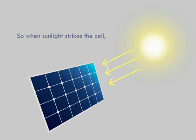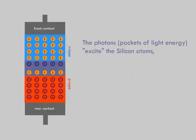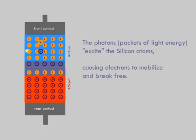When sunlight strikes the cell, the photons, or packets of light energy, excite the silicon atoms, causing electrons to mobilize and break free.